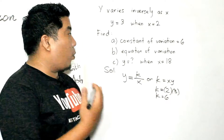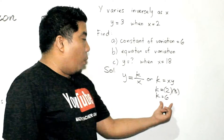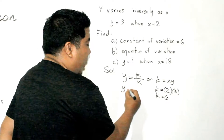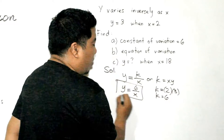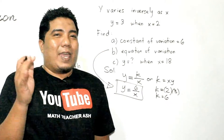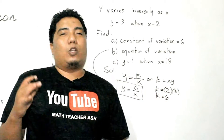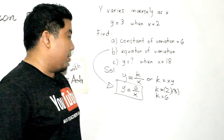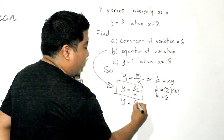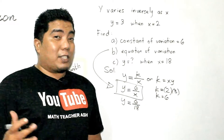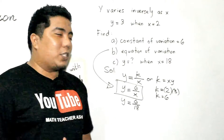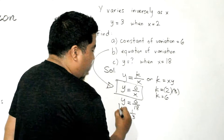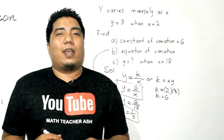Now, what is y when x = 18? Using our equation y = 6/x, substitute x = 18: y = 6/18. Simplifying to its lowest terms by dividing both numerator and denominator by 6, we get y = 1/3. Therefore, the value of y is 1/3 when x = 18.